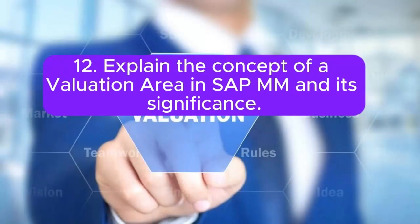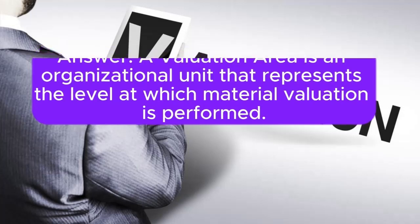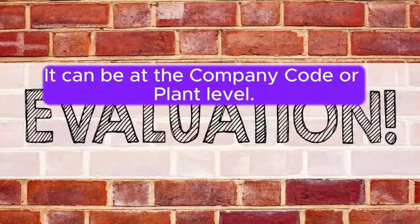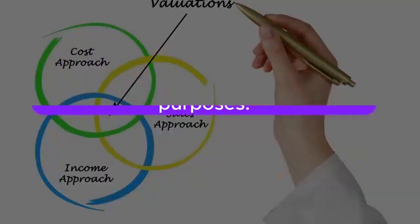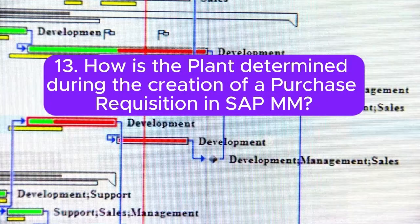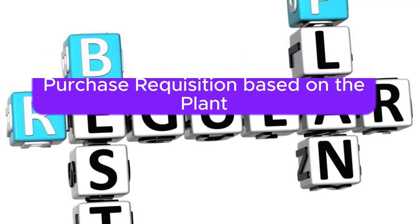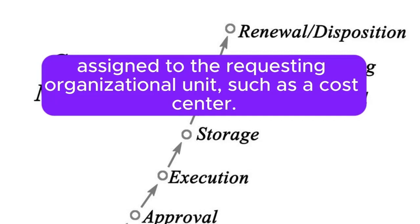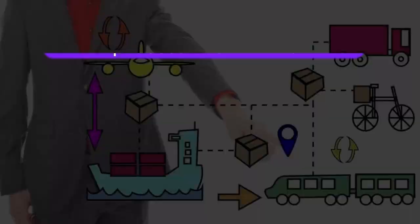Question 12: Explain the concept of a valuation area in SAP MM and its significance. A valuation area is an organizational unit that represents the level at which material valuation is performed. It can be at the company code or plant level. The valuation area determines how materials are valued for accounting purposes. Question 13: How is the plant determined during the creation of a purchase requisition in SAP MM? The plant is determined in a purchase requisition based on the plant assigned to the requesting organizational unit, such as a cost center. The default plant is derived from the organizational structure.